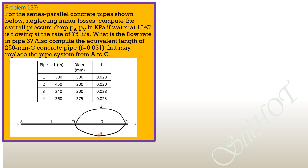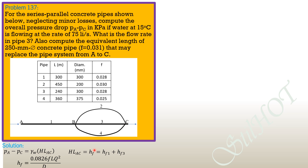For parallel pipes, the head loss of each pipe is the same. The overall pressure drop P_A minus P_C equals the specific weight of water times the total head loss from A to C, which is HF1 plus HF3. Using the Darcy-Weisbach formula for circular pipes: HF equals 0.0826 × F × L × Q² over D⁵.